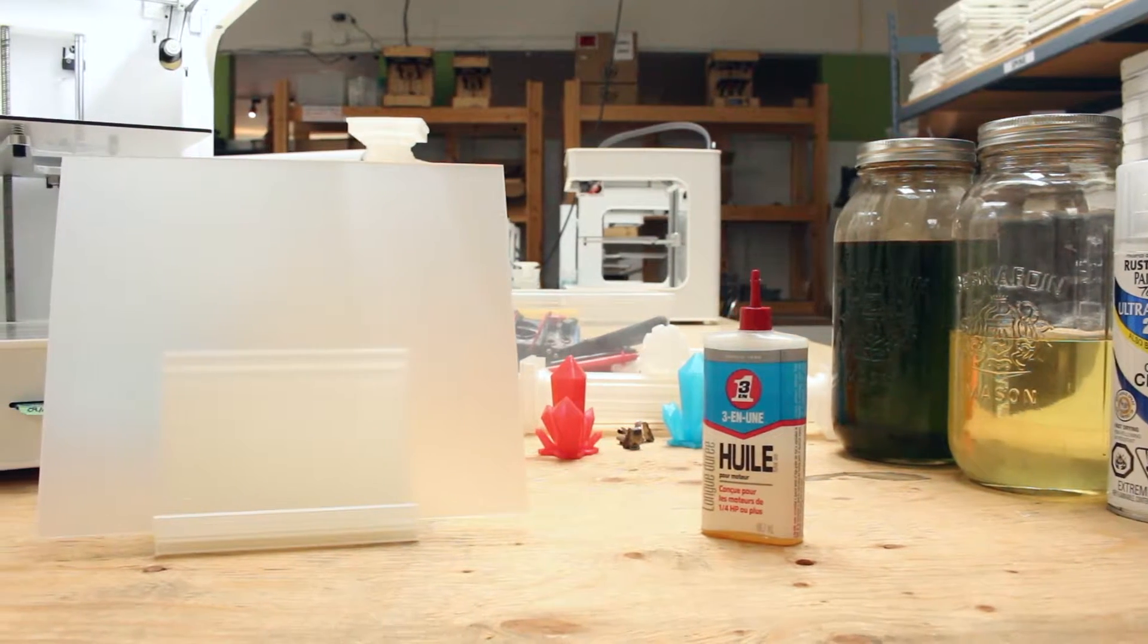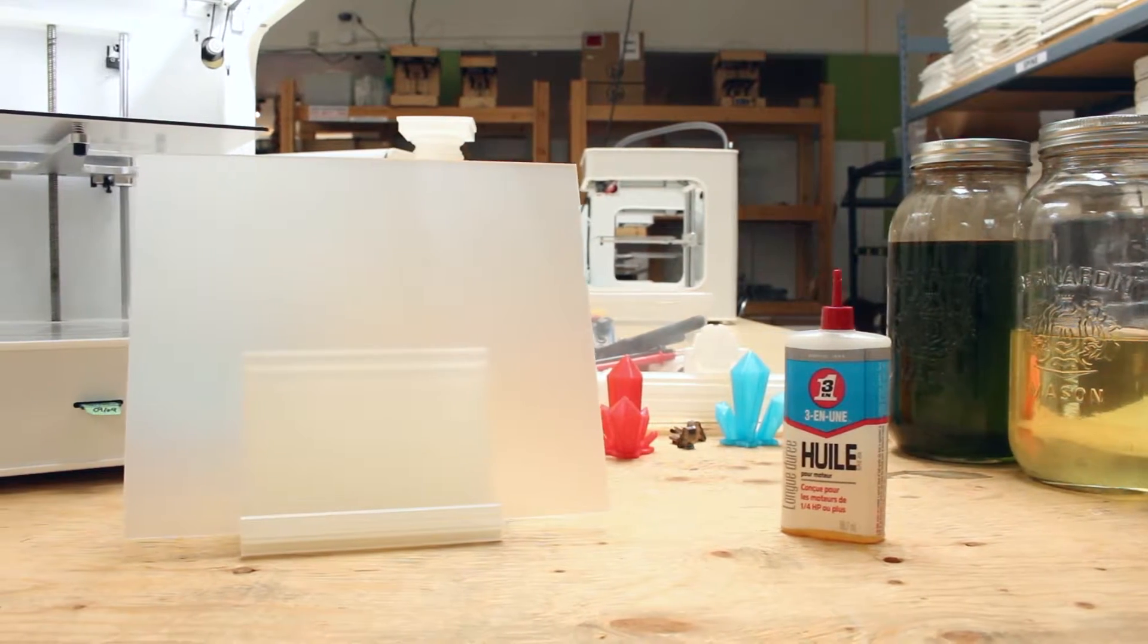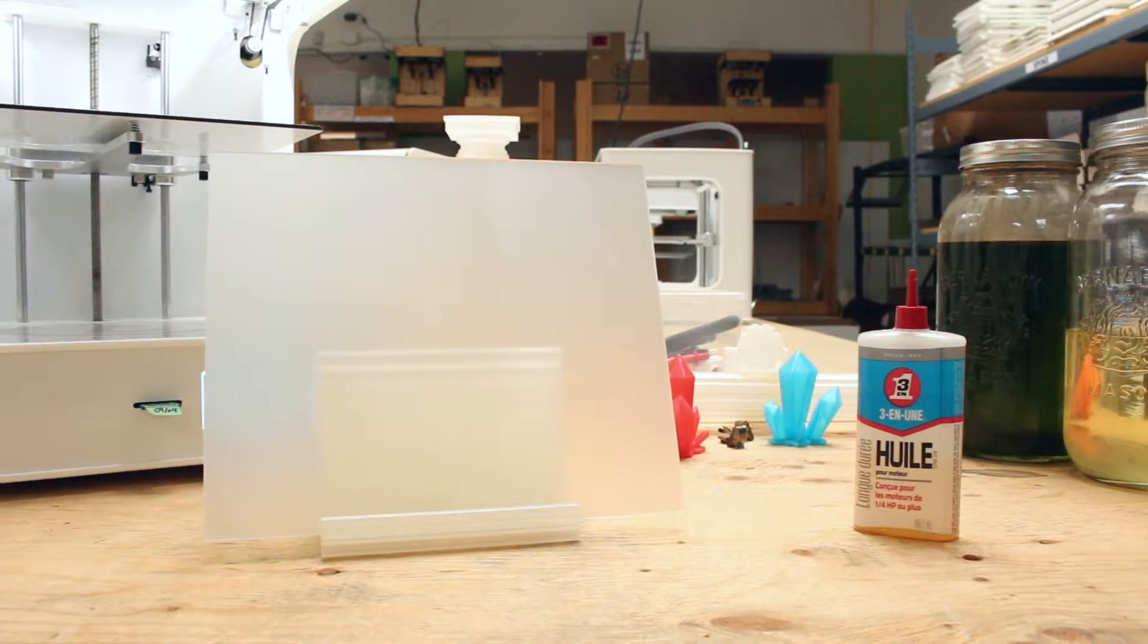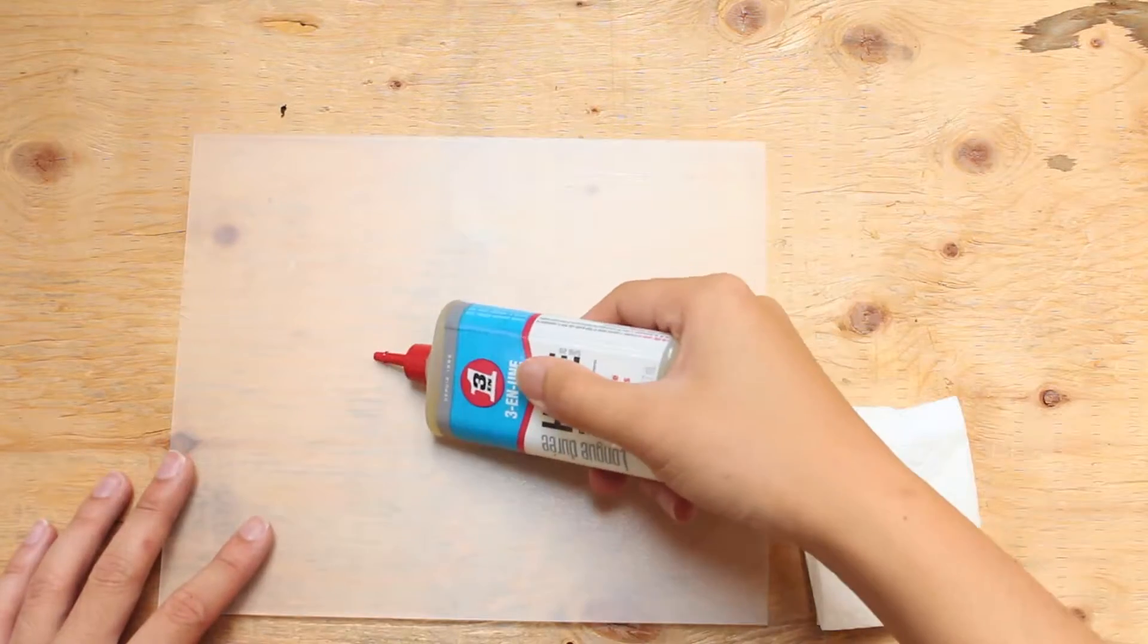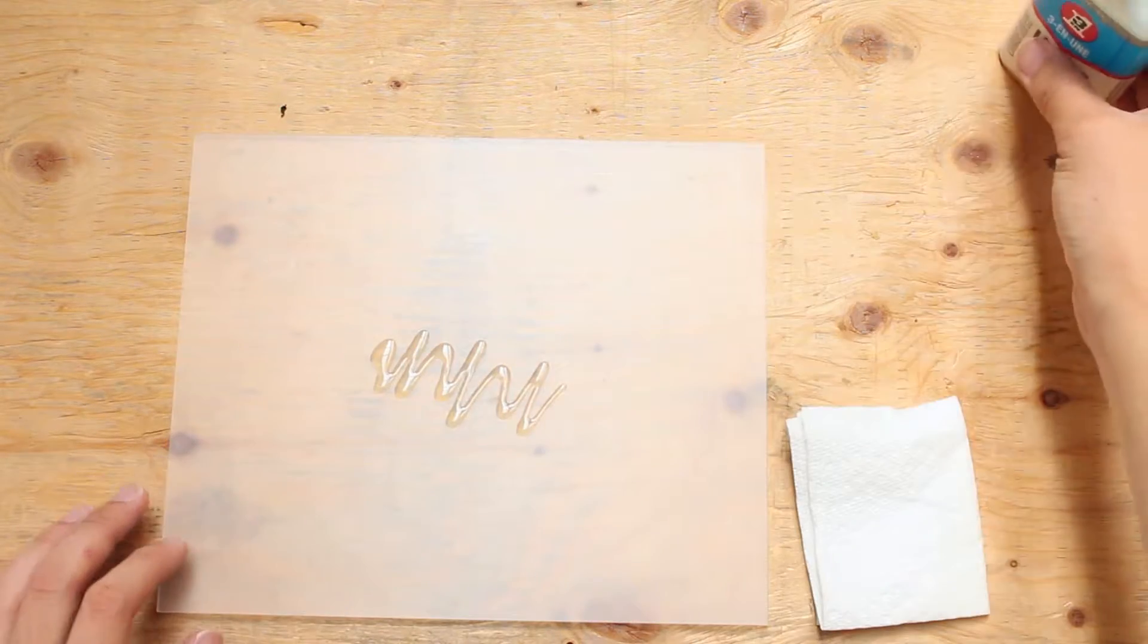Apparently the oil will make it easier to remove the print off the bed afterwards. Let's move on to apply the machine oil onto the bed. Let's pour a couple drops onto the bed and then spread it with a piece of paper towel.